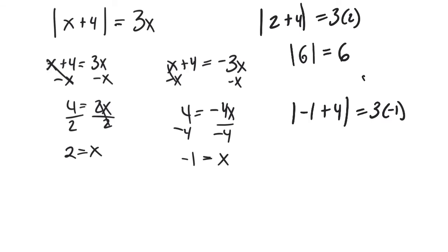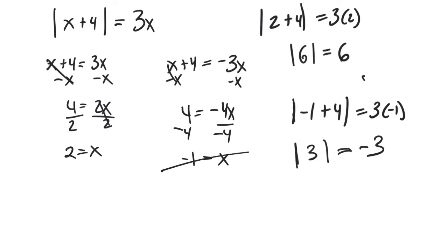Now let's check negative 1: absolute value of negative 1 plus 4 equals 3 times negative 1. On the left I can combine to get absolute value of 3, and on the right I have negative 3. It says absolute value of 3 equals negative 3 — and that's the problem. You can never have an absolute value equal to a negative number. Whatever you take the absolute value of must equal something positive. So we reject negative 1, and x is only equal to 2.